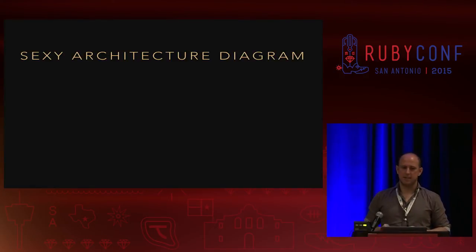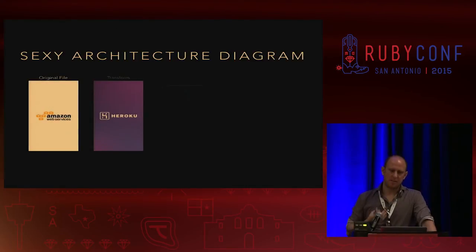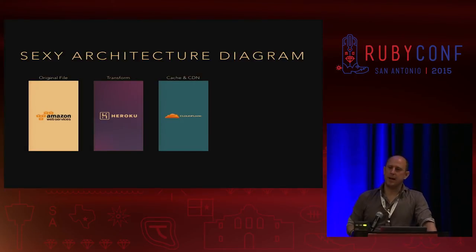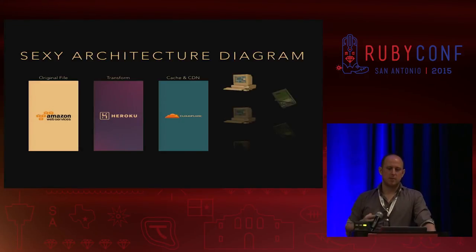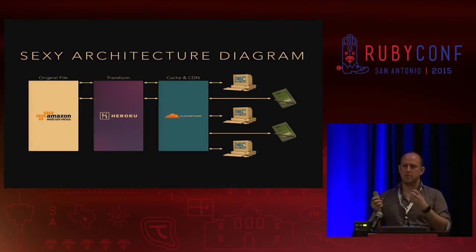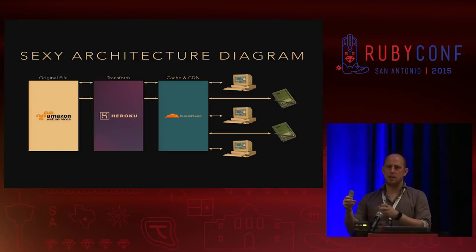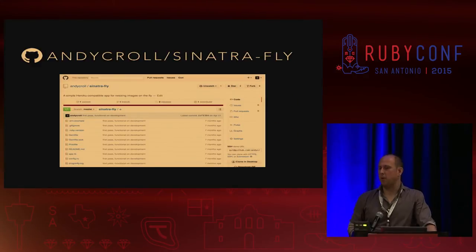Now we get into the architecture. Simply put, we're letting the internet take the strain in a way we all do pretty much already, and getting this logic away from the application. We already had images on S3 and were already using Heroku. Other CDNs are available. Devices browsing the modern internet make a call to the CDN. It calls the Sinatra app. The Sinatra app runs off and gets the S3 image, transforms it, and serves it back to the CDN. The CDN serves it back to the device. Subsequent calls for that URL only hit the CDN cache. I put it live on GitHub.